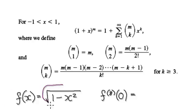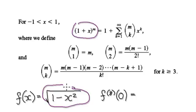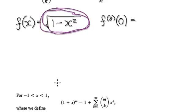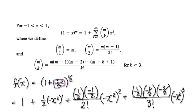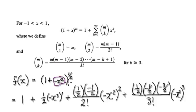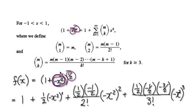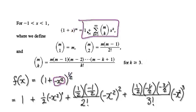To do this, rewrite this in the binomial series form. So rewrite it as this — identifying your m here and your x here. Now blindly follow the binomial expansion formula.